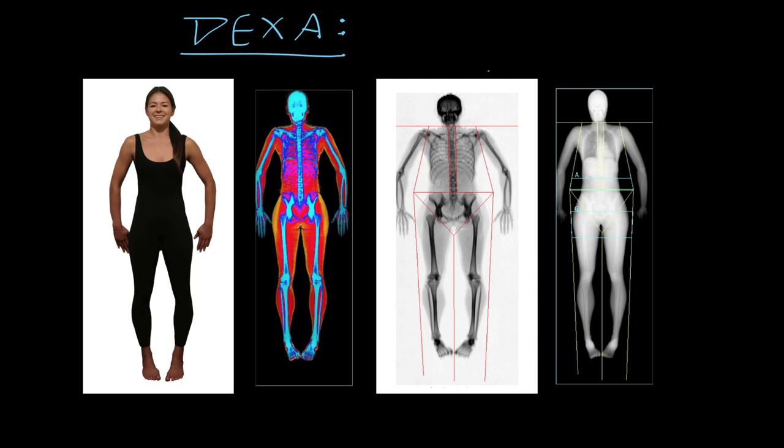But the DEXA scan is used for something very specific, and you might be familiar with it if you are into personal training and performance, because it is used to measure both bone density and body fat. DEXA stands for dual energy x-ray absorptometry, funny word, but essentially means how much energy from x-rays of two different energy levels gets absorbed.